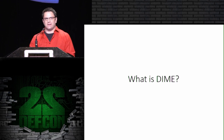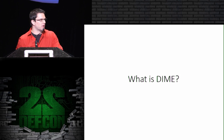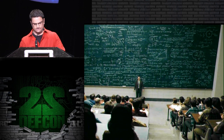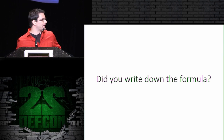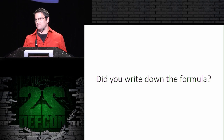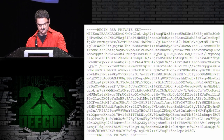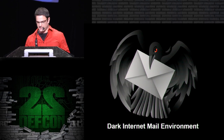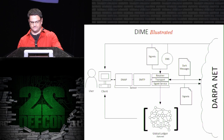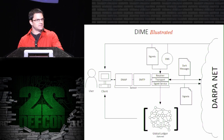I figured the easiest way to explain what DIME was, was to draw it all up on a blackboard and take a picture. Did everyone get that? All right, get your pencils ready, I'll do it one more time. I thought those private keys were supposed to be private. What is DIME? Quite a lot of different moving pieces — it's two protocols, two formats, and a management and configuration record in the DNS system.